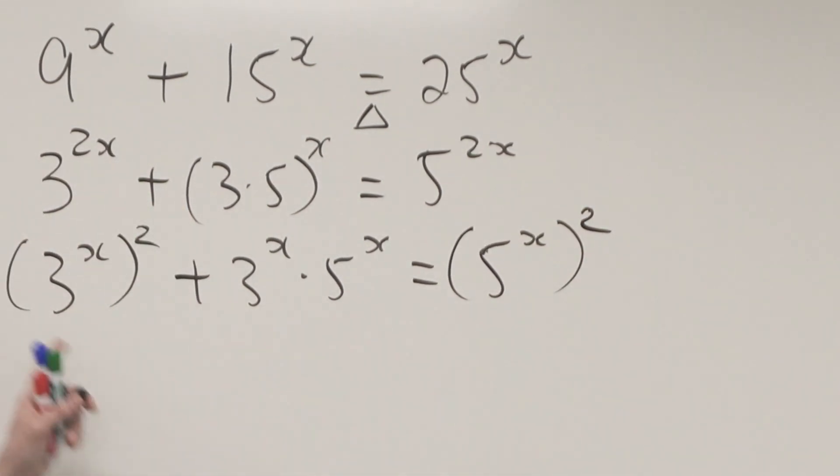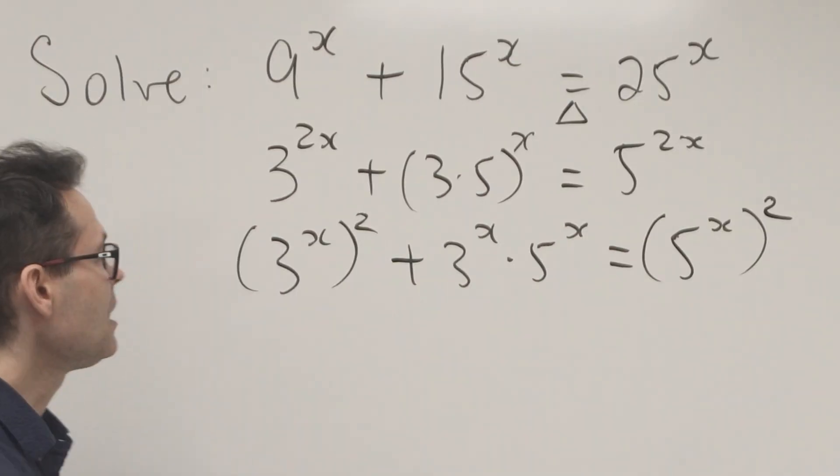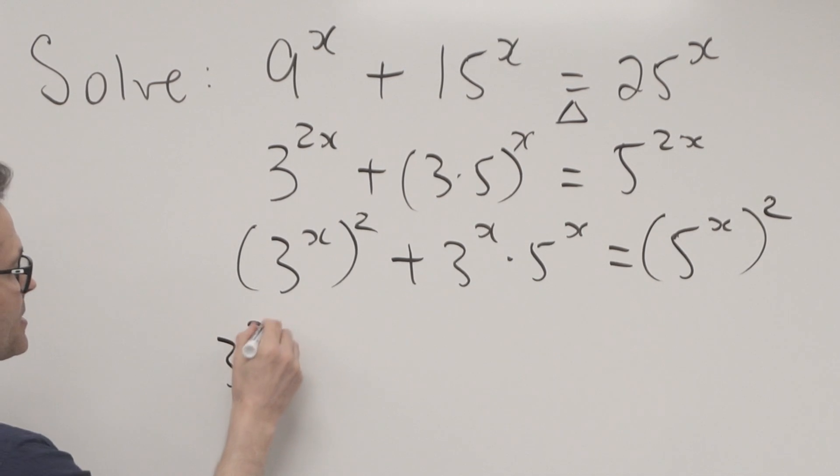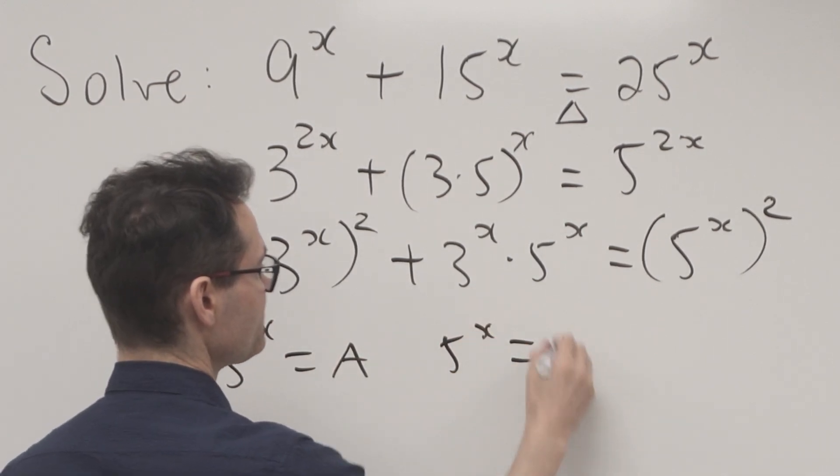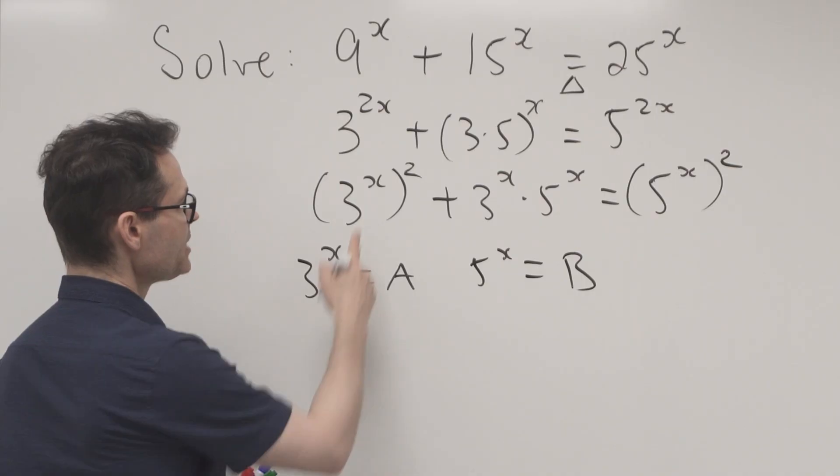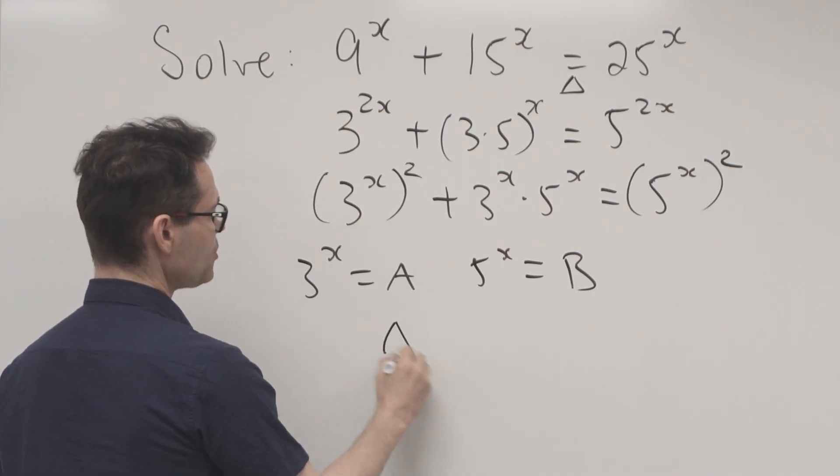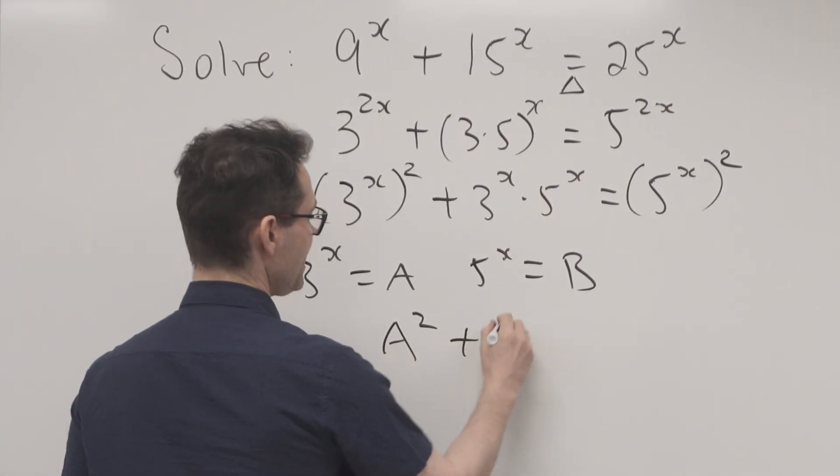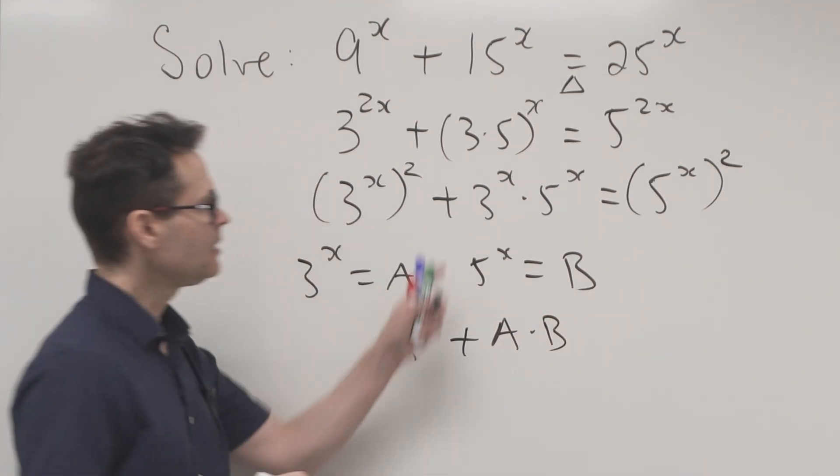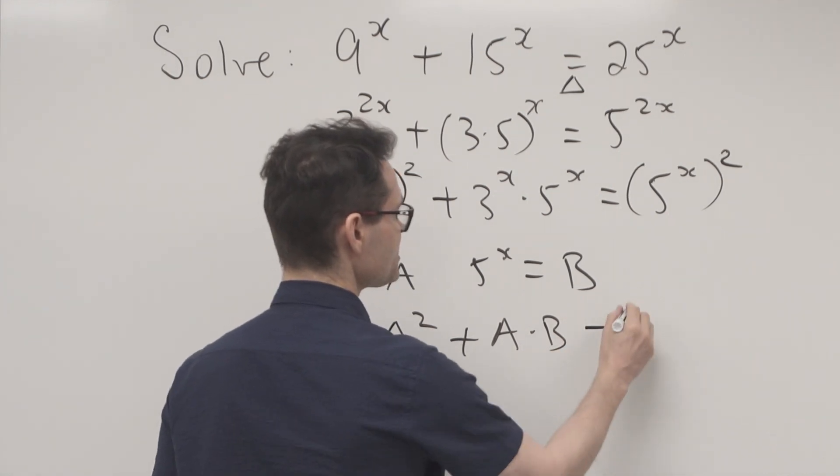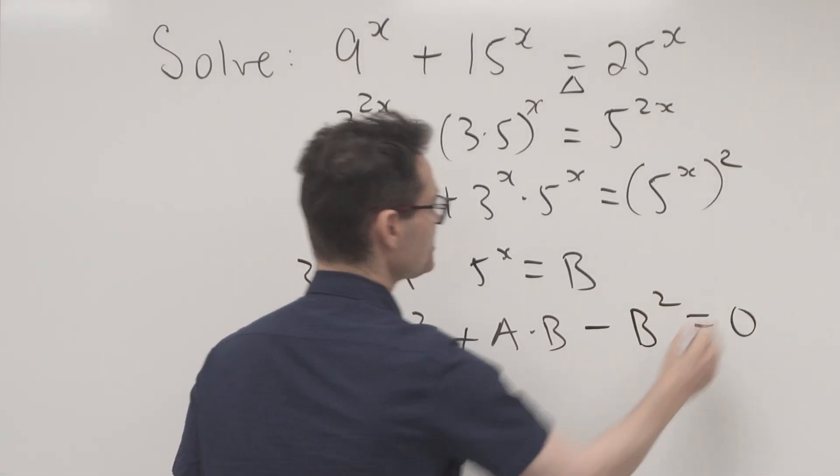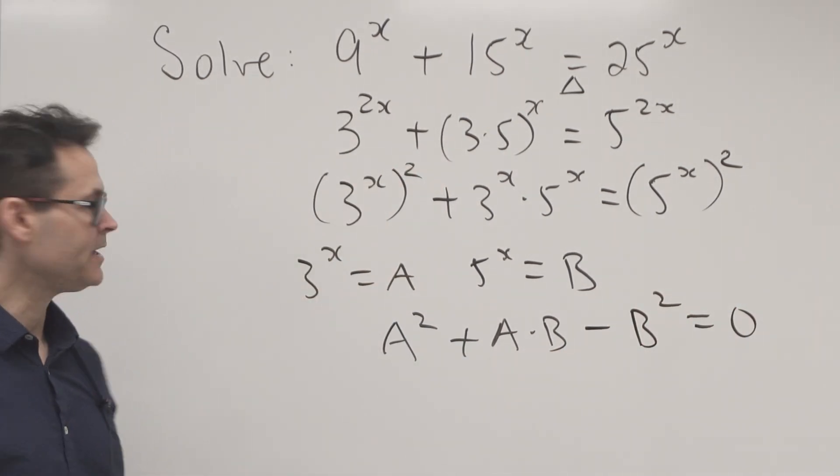I can do a substitution. Let A = 3^x and B = 5^x. So now I've got A² + A×B. Bringing this to the other side: A² + AB - B² = 0. Now I just have a quadratic equation.